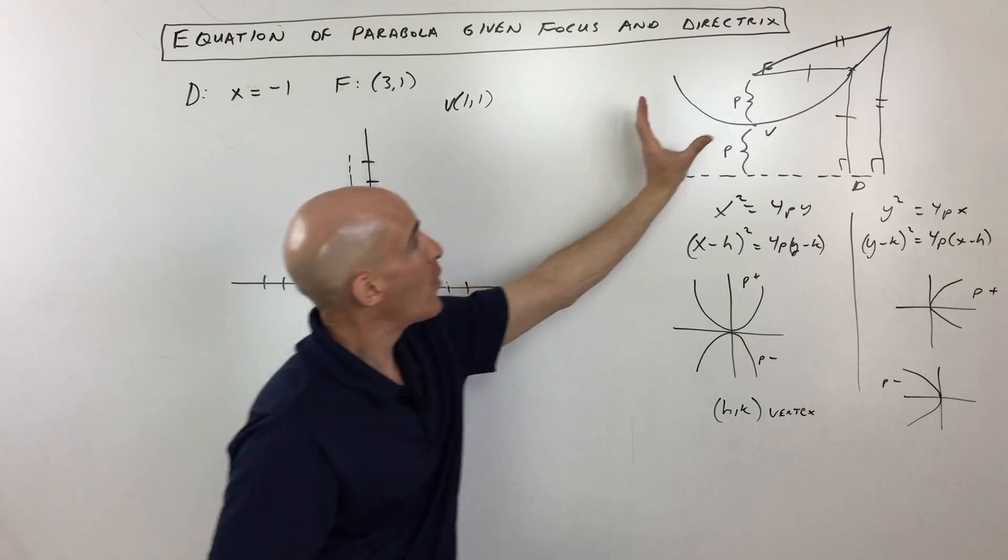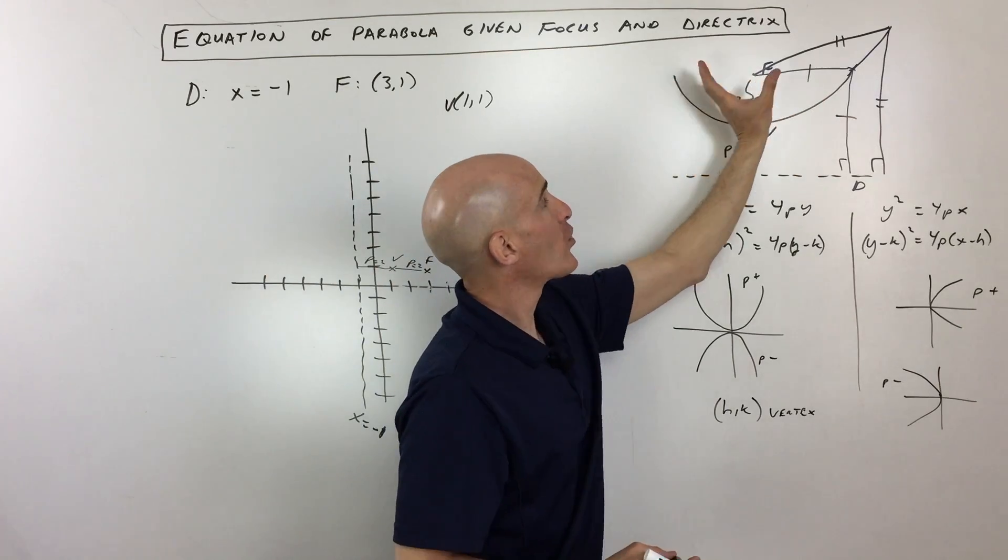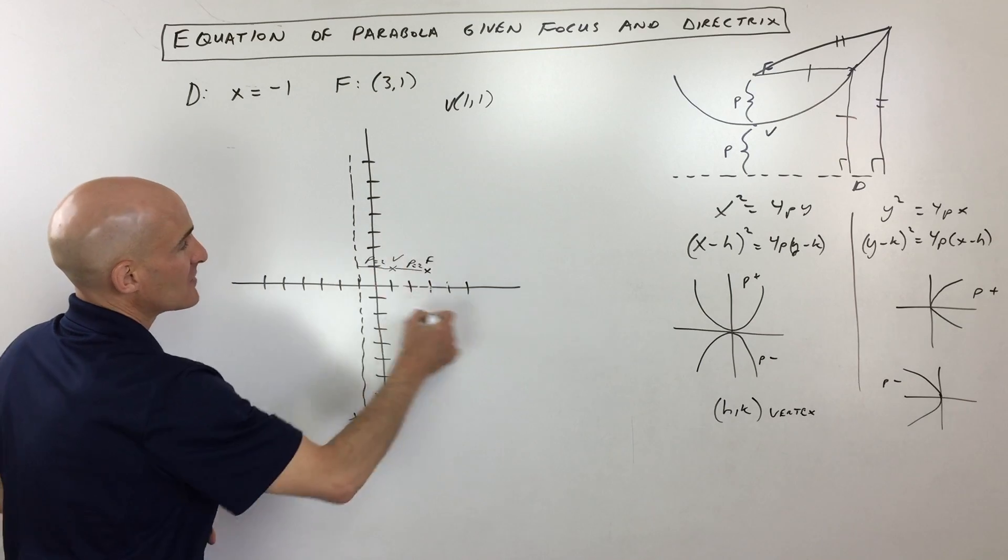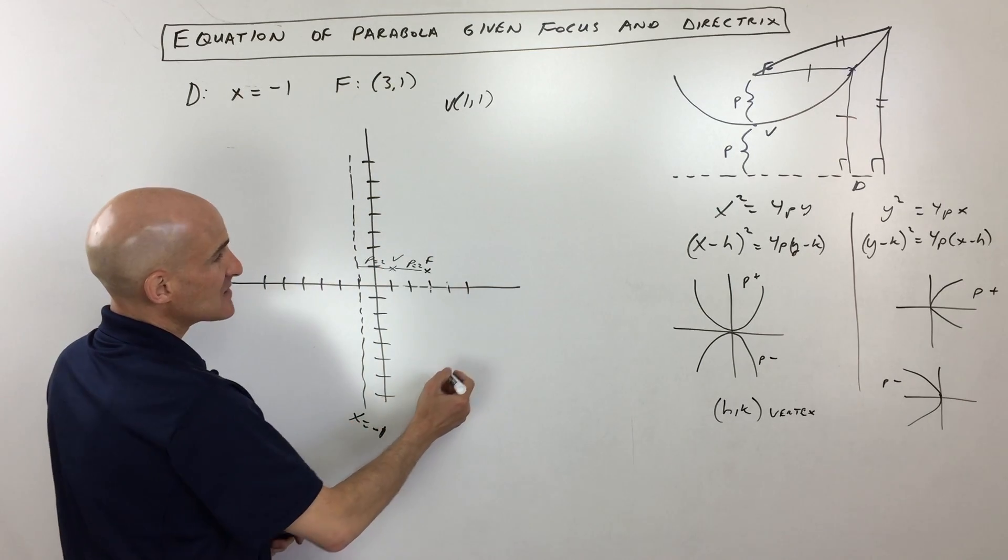So it looks like the parabola is going to be opening to the right. It opens away from the directrix towards the focus. So you can see it's going to be opening something like this to the right. So that means this is going to be a y squared variety.